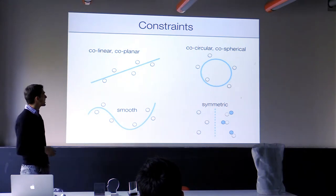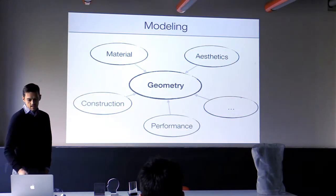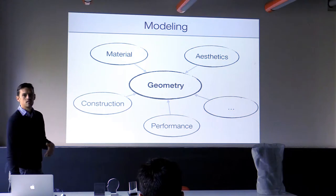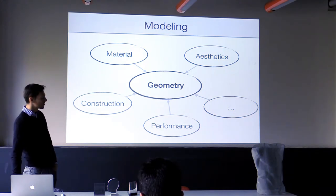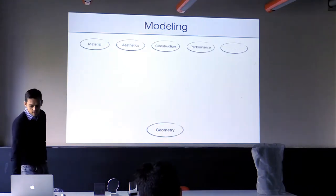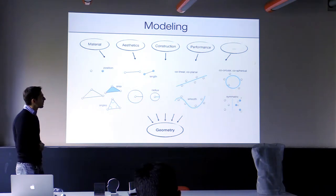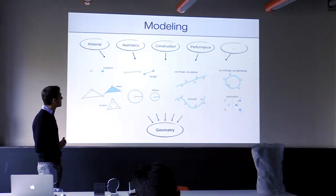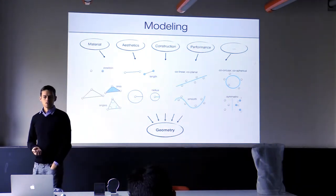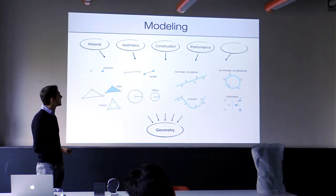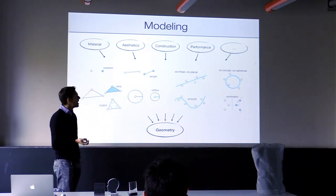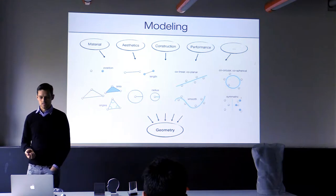One way to look at modeling — actually creating geometry — is to take all the criteria that inform your geometry, the structural performance or constraints of the construction material, and translate them into geometric constraints on the primitives. This allows you to abstract these criteria into a geometric form that enables computation. You take something abstract like the energy performance of your building and map it into geometric constraints. That's not a trivial task.